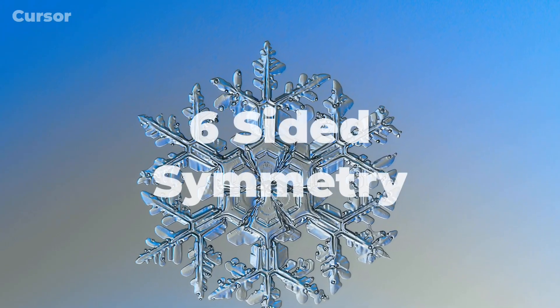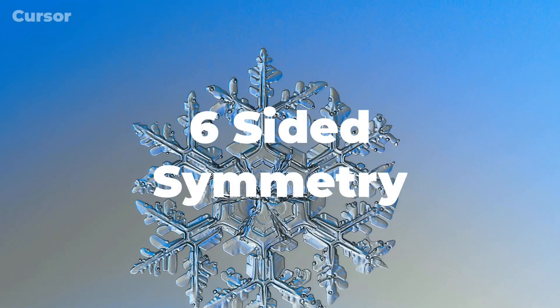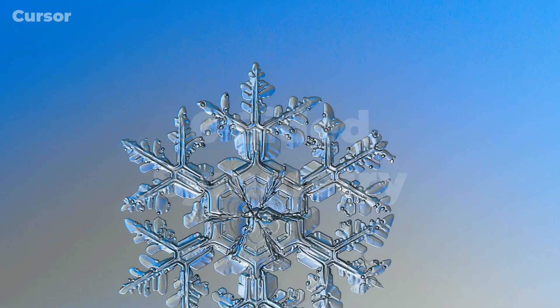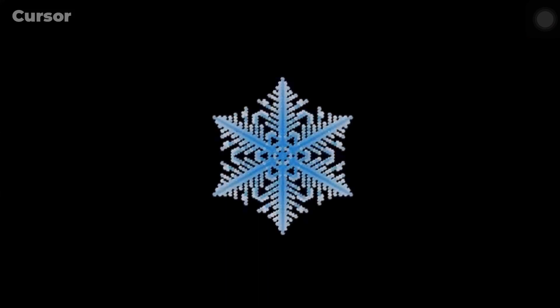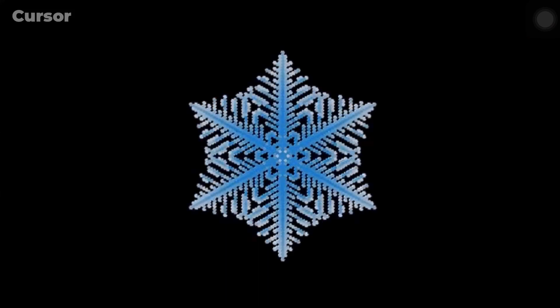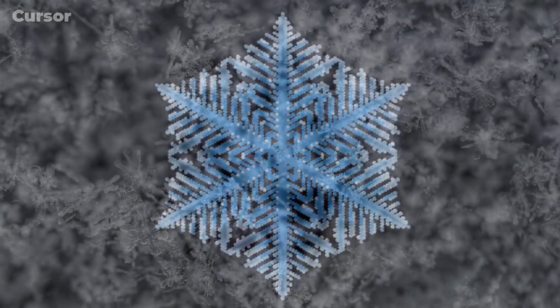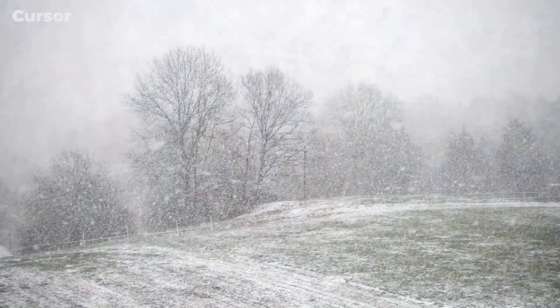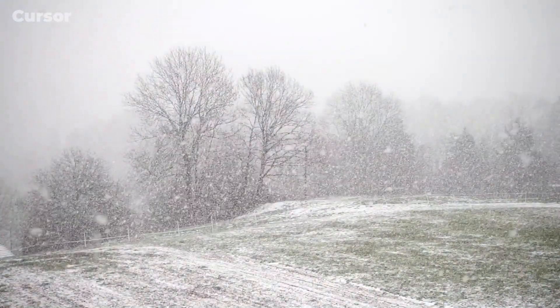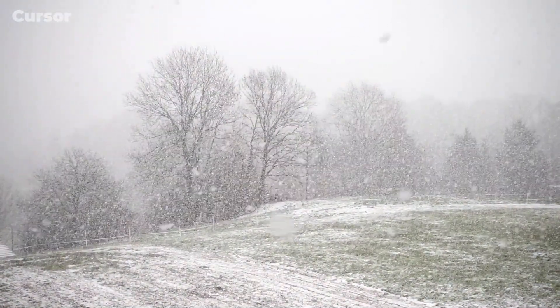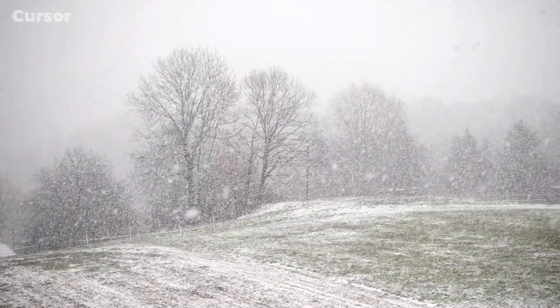Single crystal snowflakes often exhibit six-sided symmetry. This is because the initial ice structure is six-fold and the arms grow from each of these points. Many snowflakes appear to be two-dimensional works of art, while others look like a matted cluster of fraying ice strands. Most come as individuals, although some can fall as multi-flake clumps.